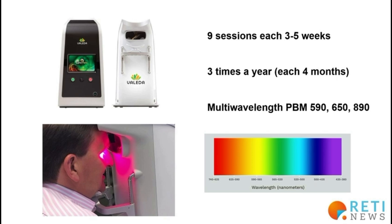As you can see in the lower left corner, the patient positions themselves in front of the device and looks at a light that has different wavelengths. The wavelengths are 590, which is around yellow; 650, which is around red; and 890, which is near infrared. Nine sessions are conducted over a period of three to five weeks, meaning nine sessions in one month, with the patient attending approximately twice a week to complete the nine sessions.